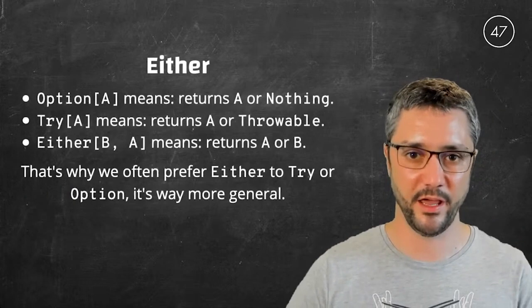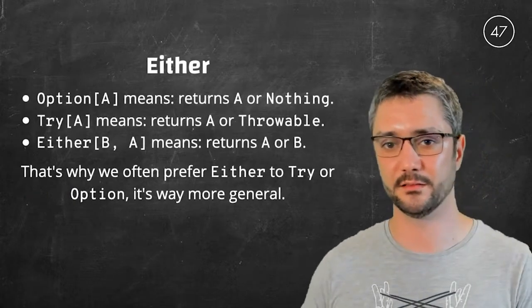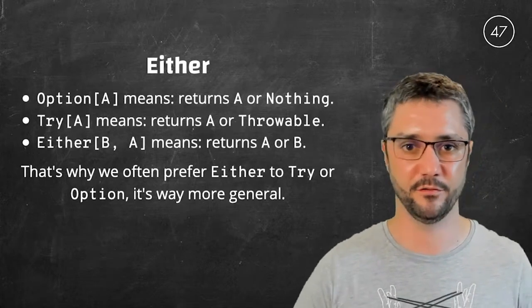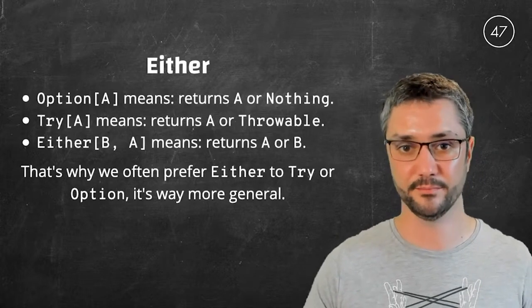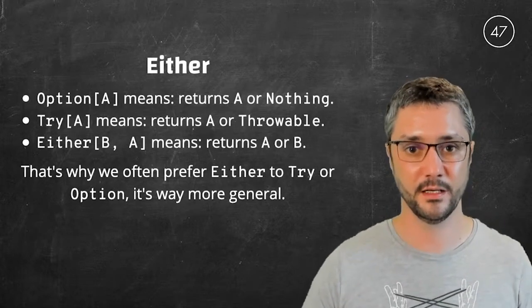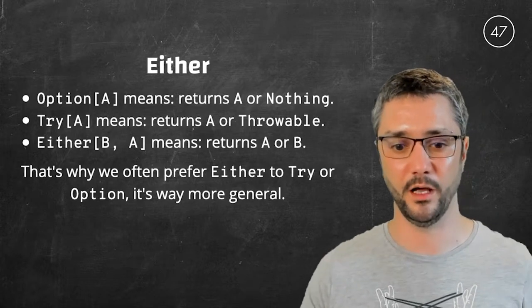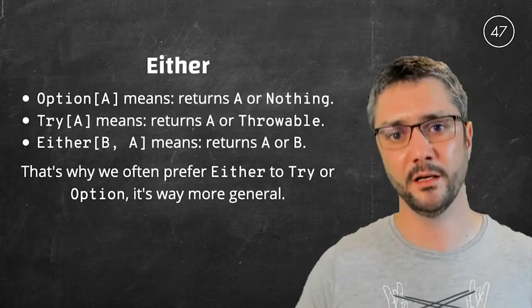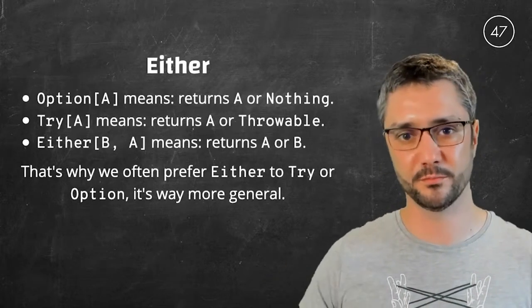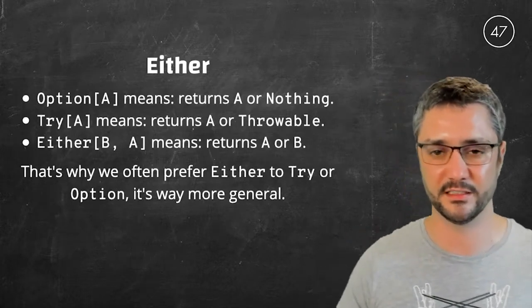Next, we have either. So either is more general than option or try. Option of A is for returning an A or nothing. Try of A is for returning an A or a throwable. And either B A is for returning an A or a B. So that's why, because it's more general, it subsumes try and option, we often prefer either as our error advertising type.